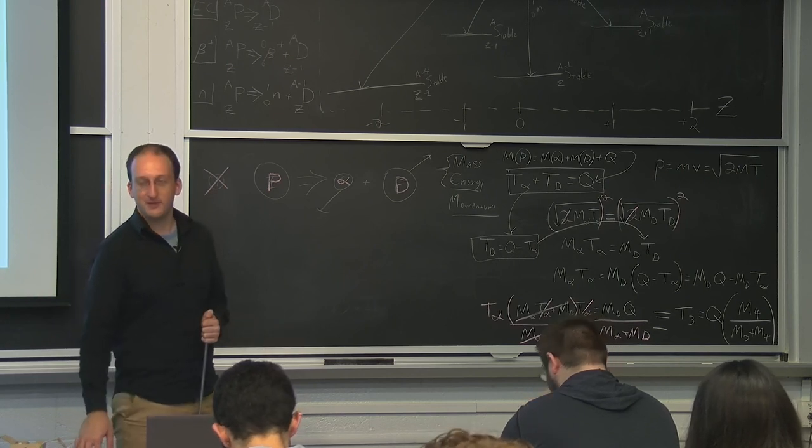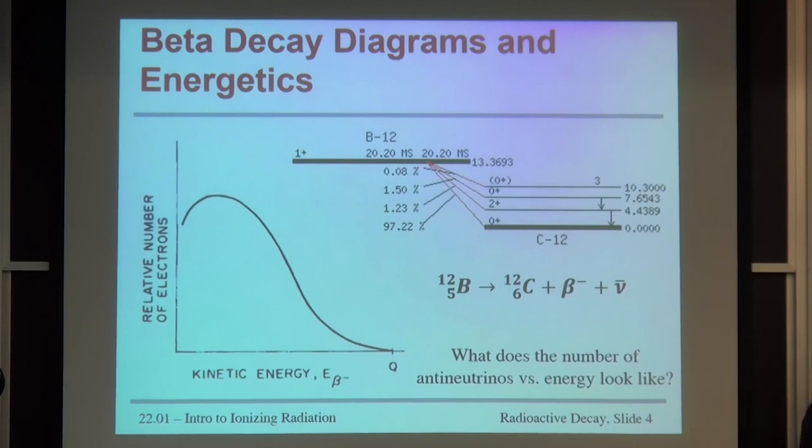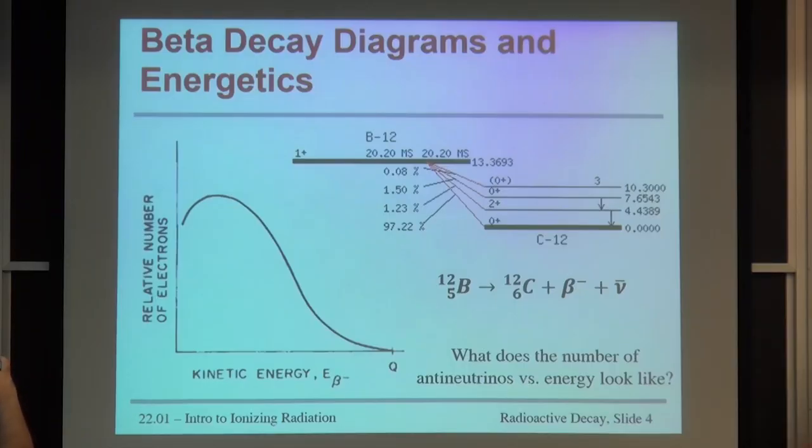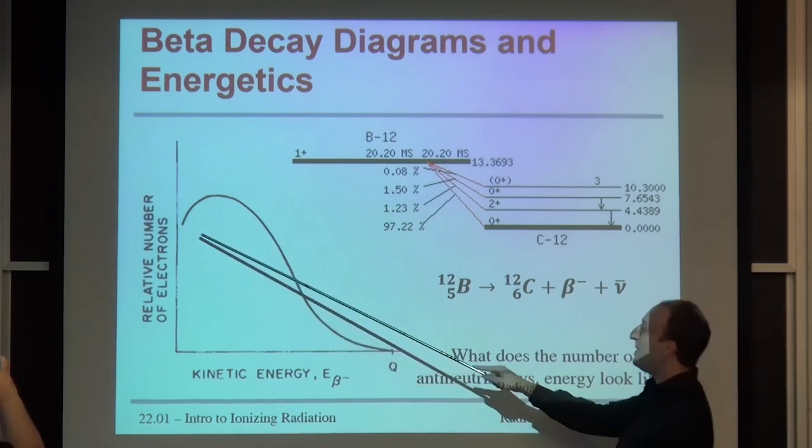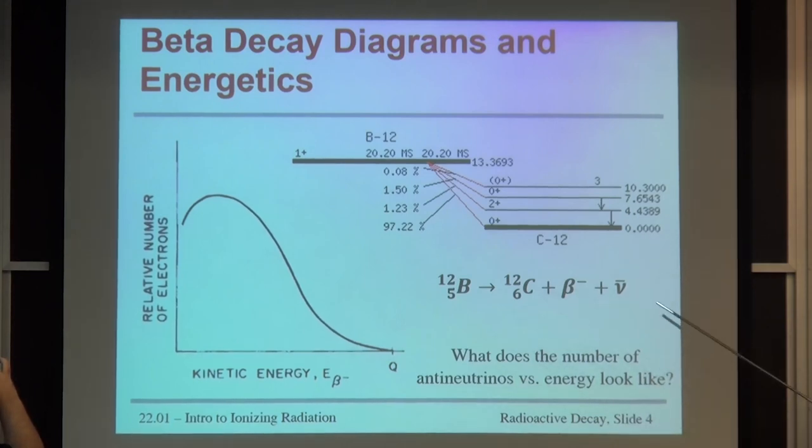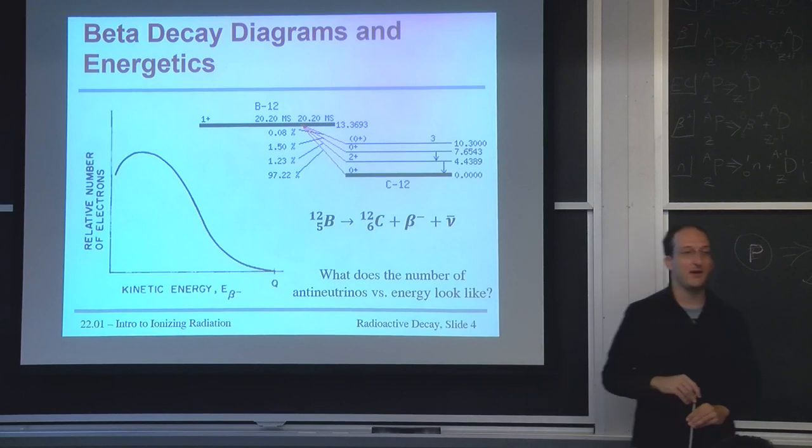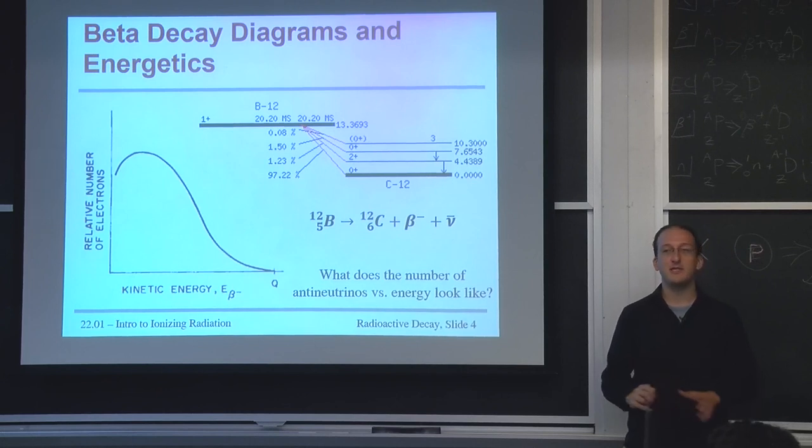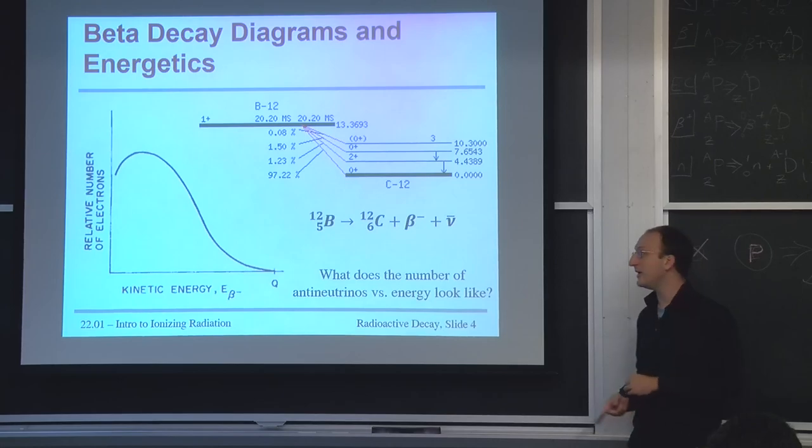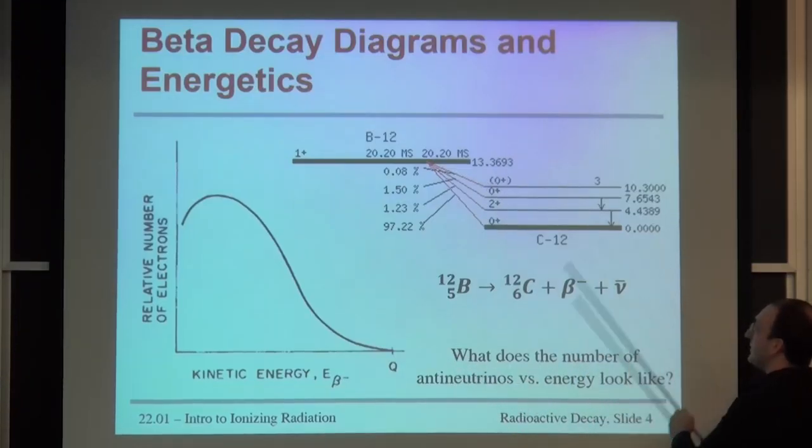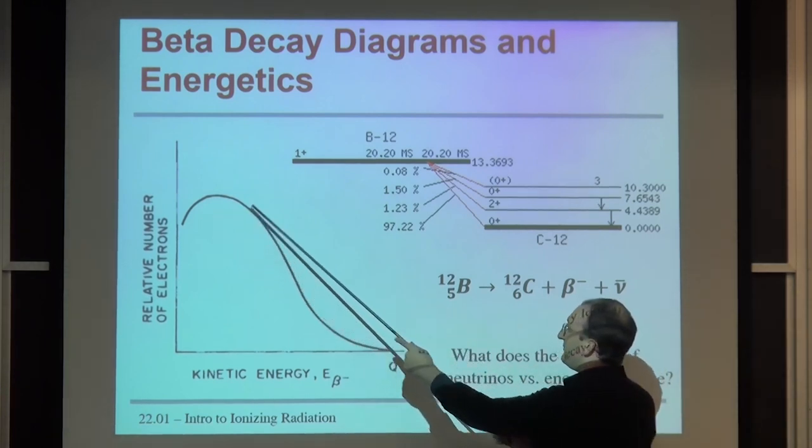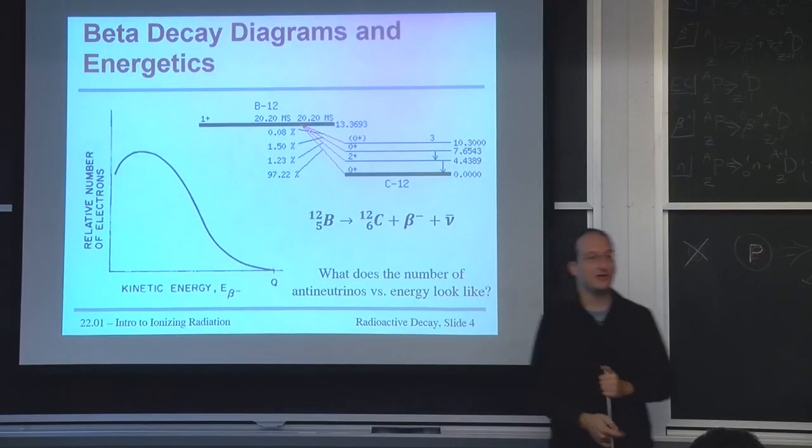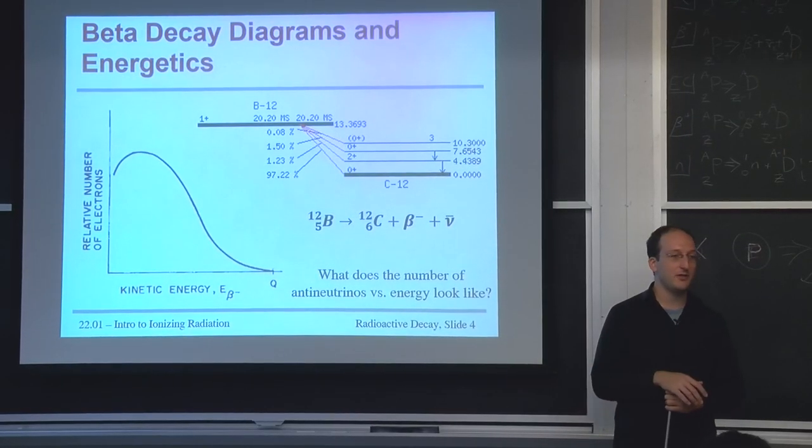So beta decay is a kind of funny one. You don't tend to get a beta particle out at the energy of this q value. You actually end up getting a spectrum. And this measured spectrum of different beta kinetic energies is what led to the thoughts that there must be something else carrying away some of that extra mass or some of that extra energy.